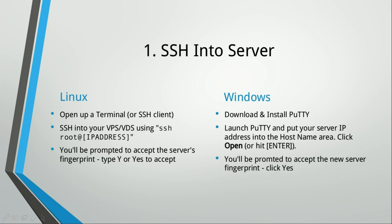The first thing we need to do is SSH into the server. For Linux, you really don't need to download anything — you can just open up a terminal or SSH client and SSH into your VPS using the command on screen. You'll be prompted to accept the server's fingerprint because it's new, and you can type Y or yes to accept. For Windows, you'll have to download and install PuTTY — I'll leave a link to that in the description. Once you do that, launch PuTTY and put your server IP address into the hostname area, then click Open or hit Enter, and it'll prompt you for your password.